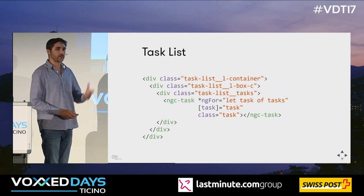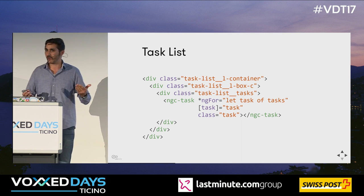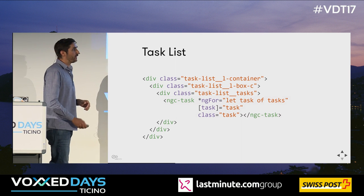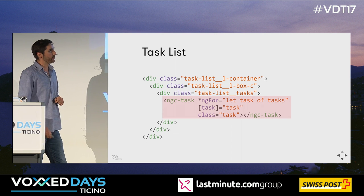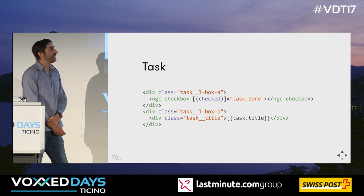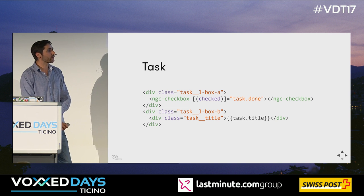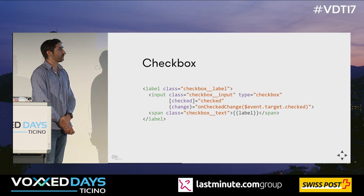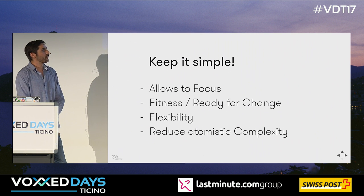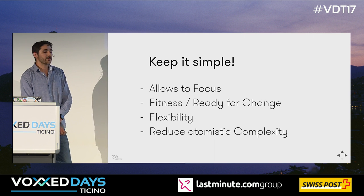Instead, let's divide the responsibilities. We have a task list component whose responsibility is only to list tasks — not how a task looks. Then we render task components, and in the task component we're concerned about how a task looks and behaves. We go even further: our checkbox is a custom animated checkbox, so we create a checkbox component and include it there. Keeping it simple is really the key.